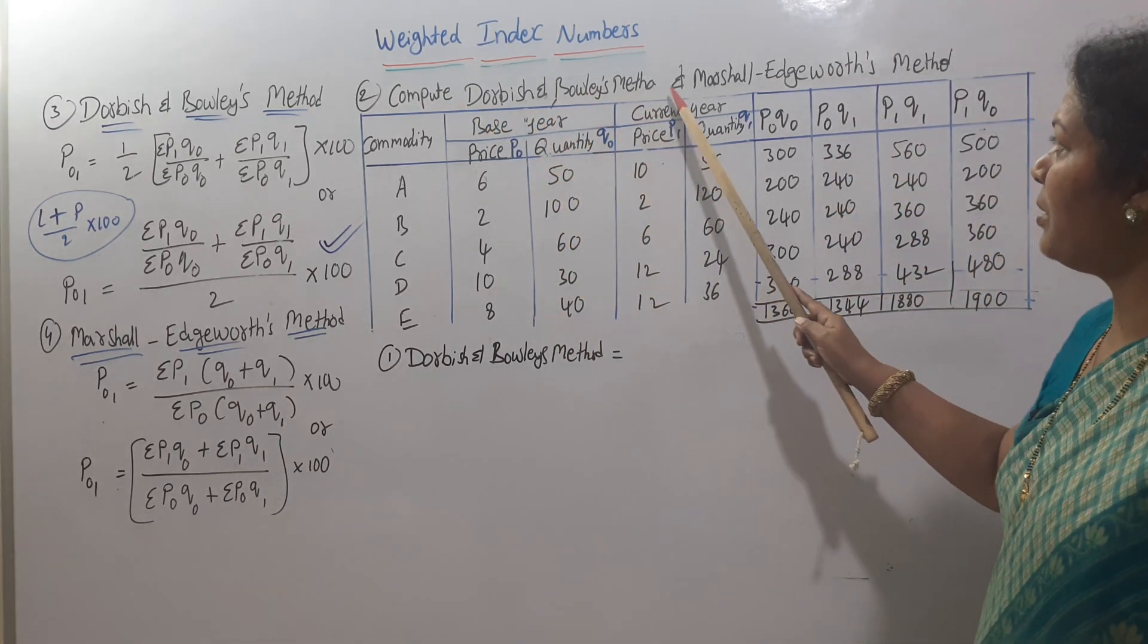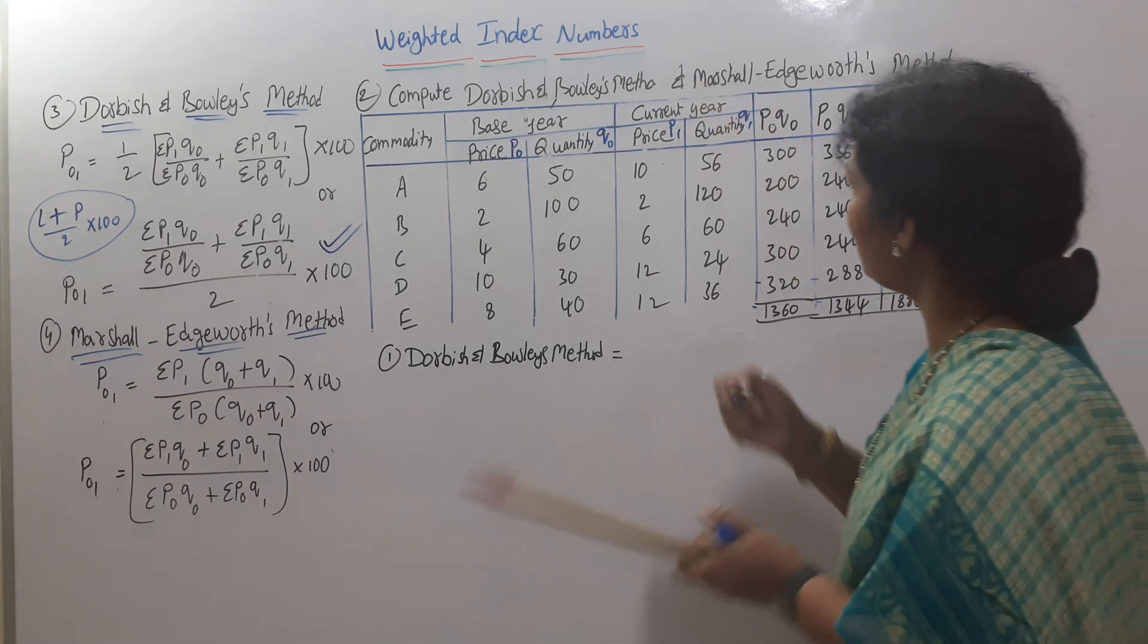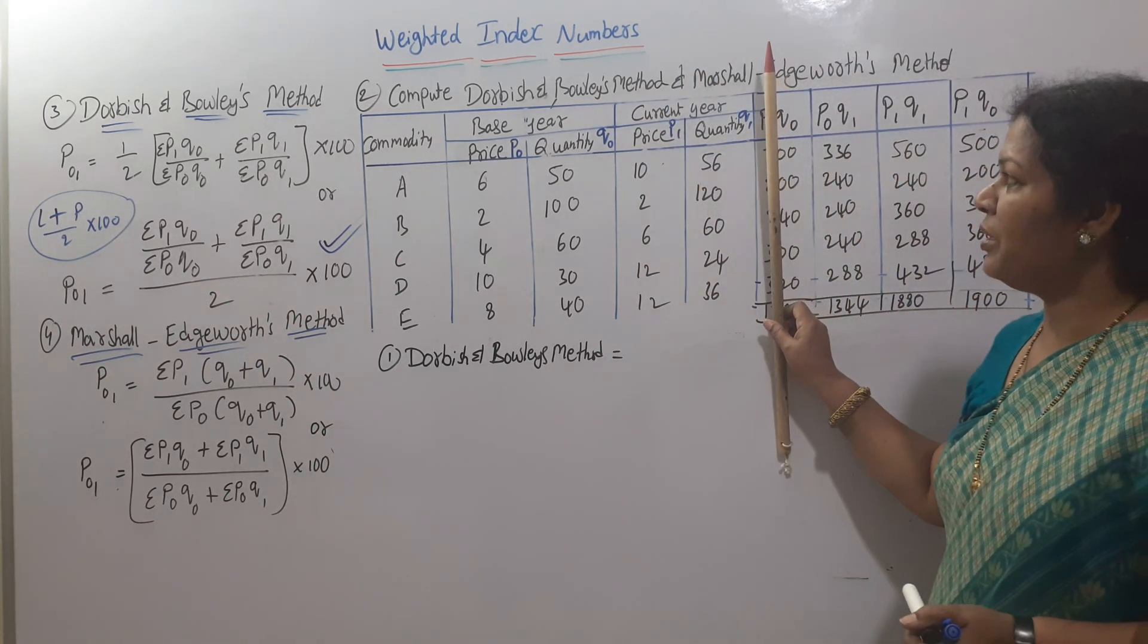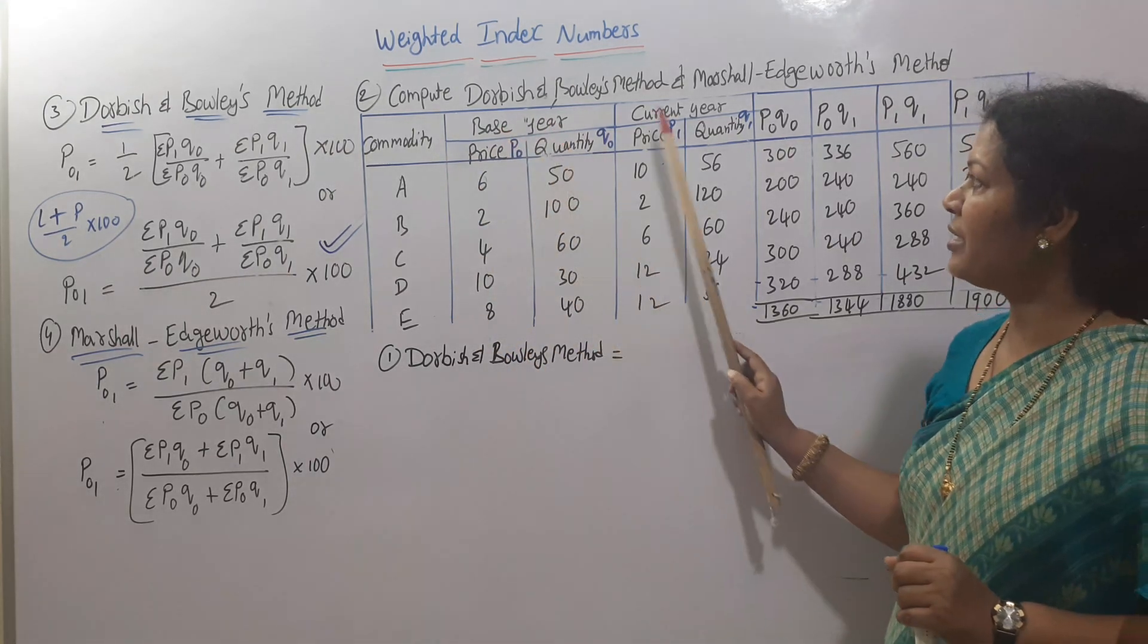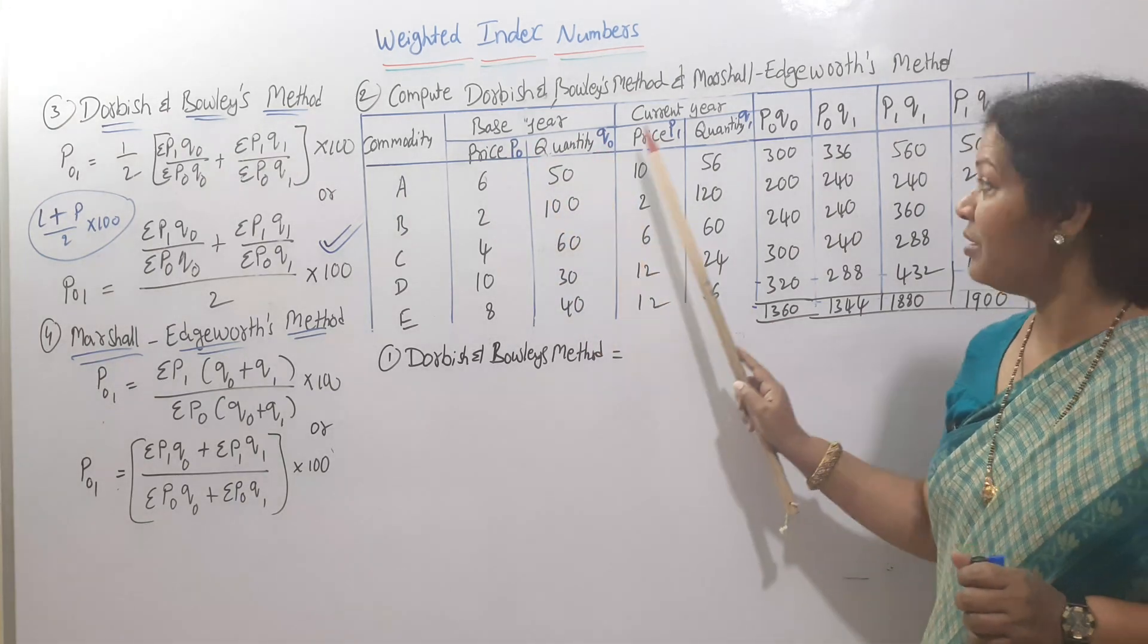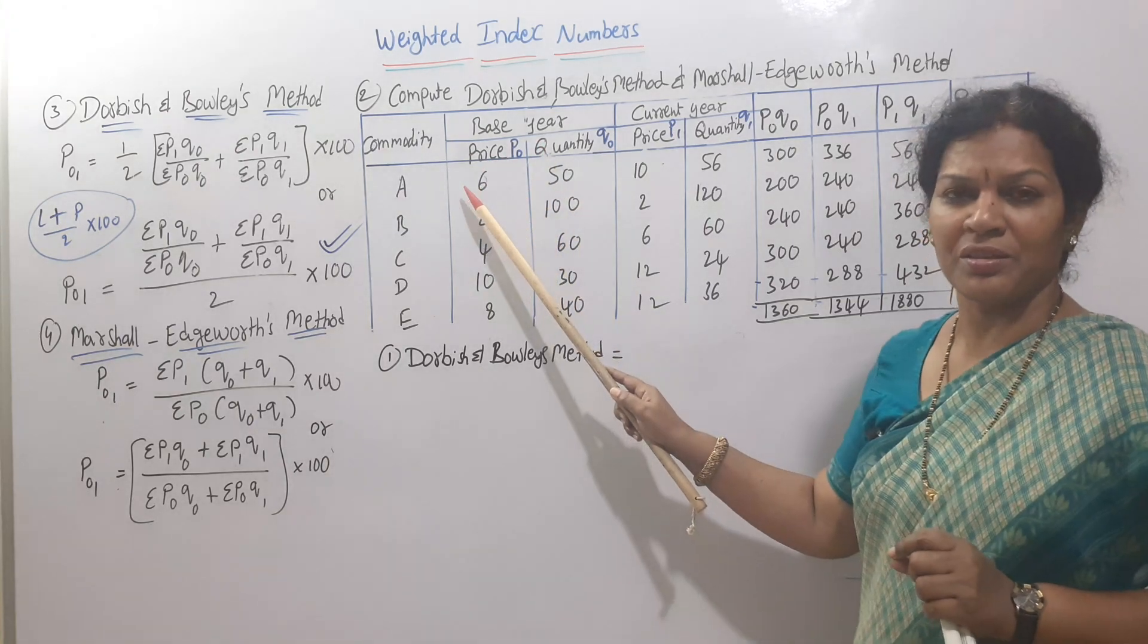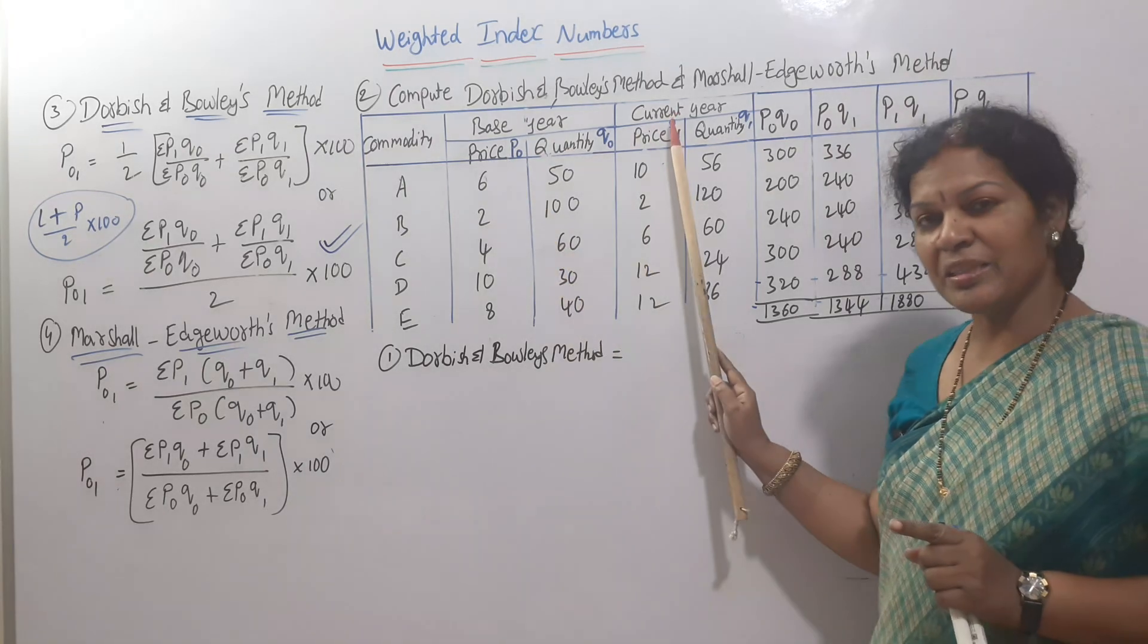Compare Dorbish and Bowley's method and Marshall-Edgeworth method. The problem gives five commodities A, B, C, D, E, with base year price P0, base year quantity Q0, current year price P1, and current year quantity Q1.